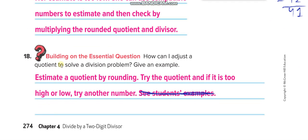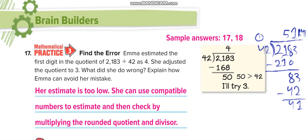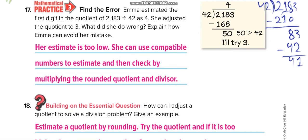How can I adjust a quotient to solve a division problem? Give an example. Estimate a quotient by rounding, try the quotient, and if it is too high or low, try another number. Keep trying until you get the perfect choice. Like this one: 4 times 2 is less than 218, but when you multiply it by 5, you get 210, which is close to 218.